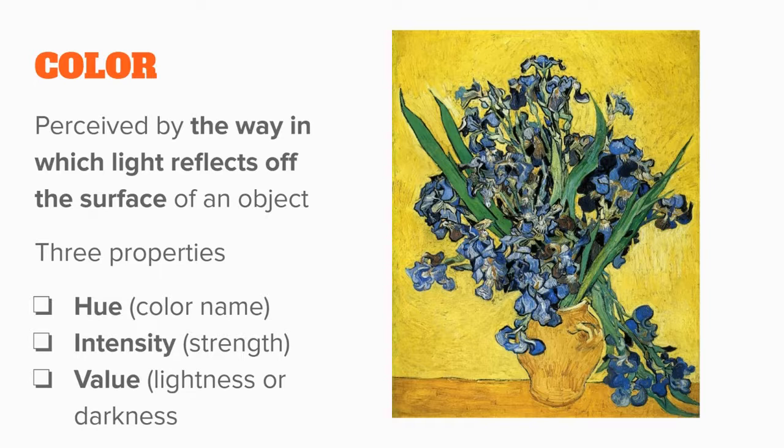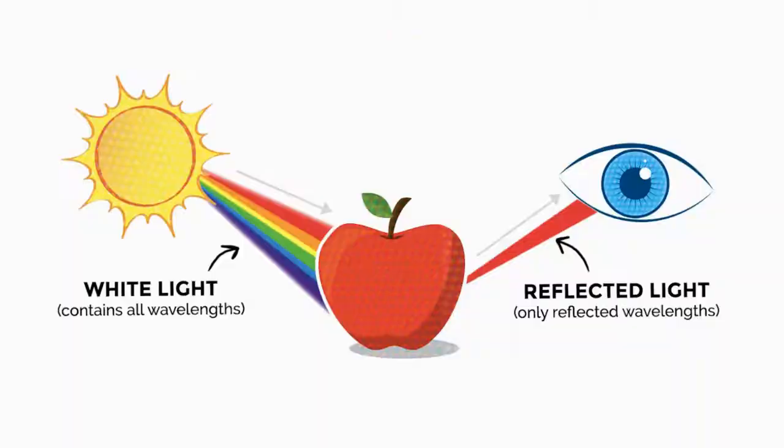Let's talk a little bit more about color. Color is defined by the way in which our eye perceives the light that is reflecting off the surface of an object. Color itself has three properties. The first is known as hue — this is the color's name. Next, we have the color's intensity, or how strong that color is. Third, we have value, which refers to how light or how dark a color is.